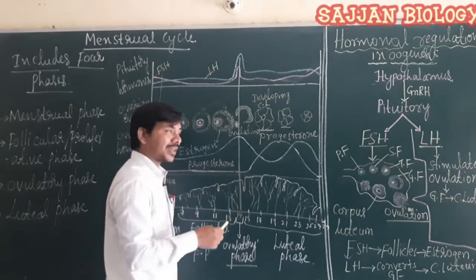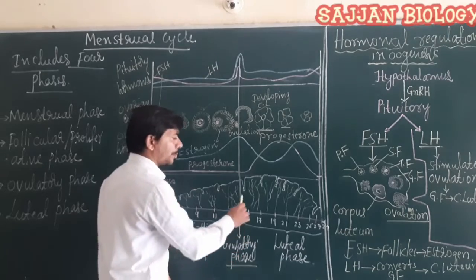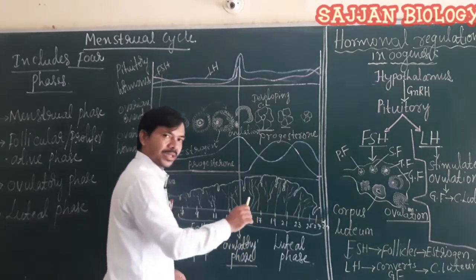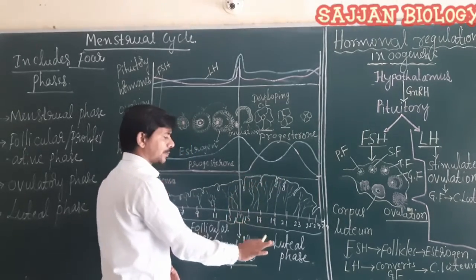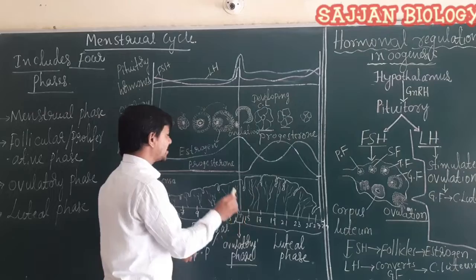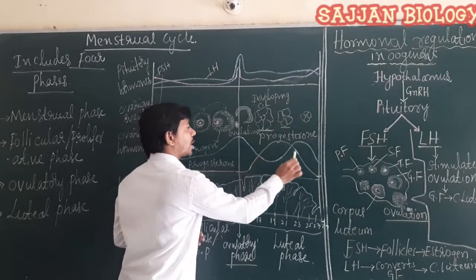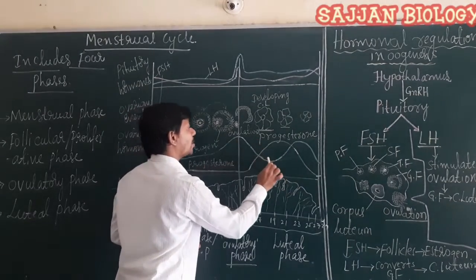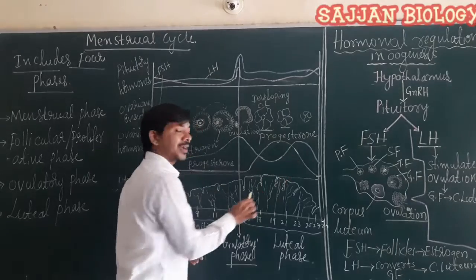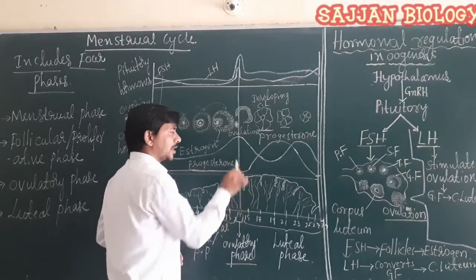During the luteal phase, proliferation of the endometrium wall takes place. Progesterone hormone increases, but estrogen hormone decreases.